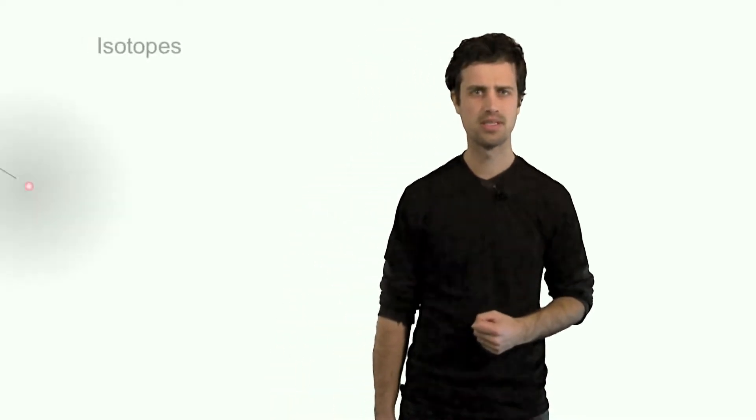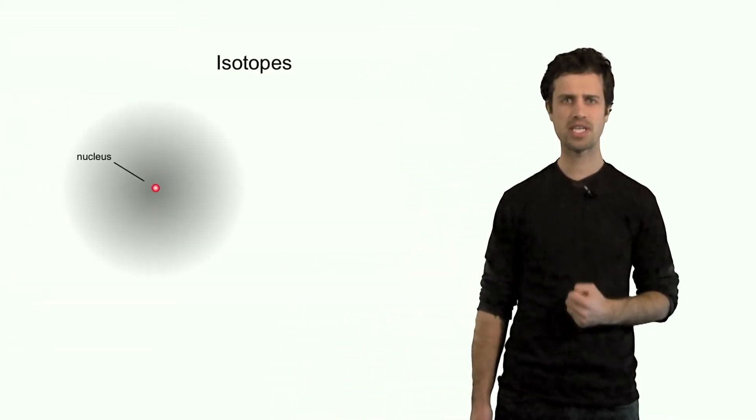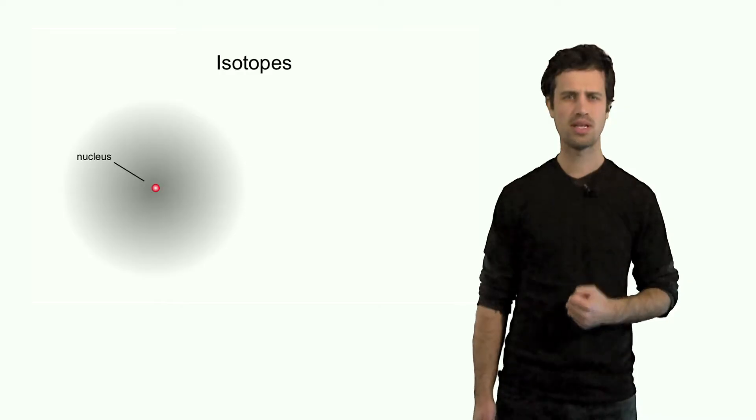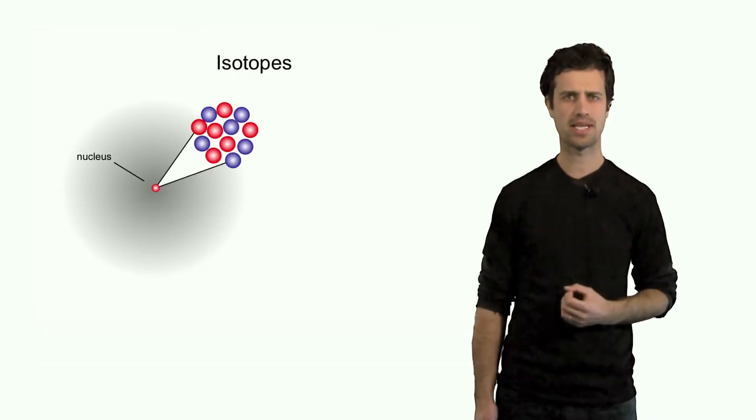We have seen that atoms are composed of nuclei, which are composed of protons and neutrons, and of electrons around it. So let's look at a particular example — let's look at a carbon atom.